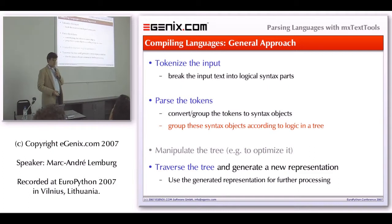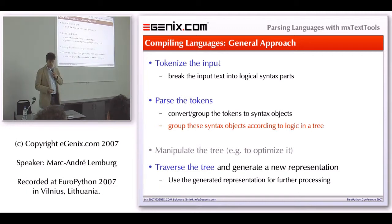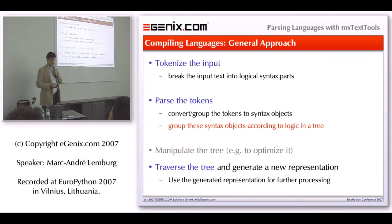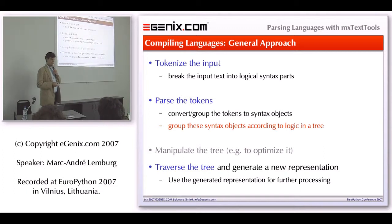The general approach when parsing languages: you have a textual representation of your program, and compiling basically means converting it to another representation. So you have to make the compiler understand what your input text is about, work on it, and then generate some output. The first thing you do is break up your input text into logical units — what you normally call tokens. For example, a token would be an integer literal, a string literal, or if you think of a class definition in Python, you have various tokens: the word class, then the name, then parentheses, then base classes, and so on.